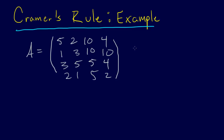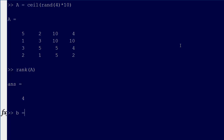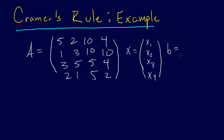So we're just going to go ahead and apply Cramer's Rule. In order to do this, I have a whole system, and so let's say X is just going to be X1, X2, X3, X4. Then we have B — let's generate that: B equals a 4 by 1 random vector times 10. So there's our B: 8, 4, 3, 5.